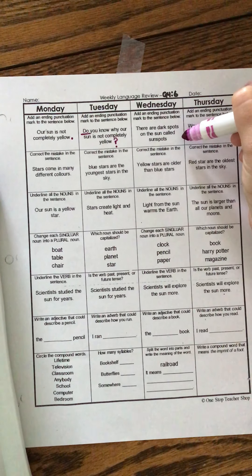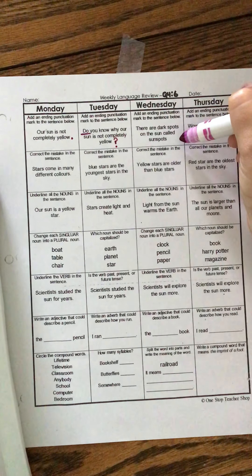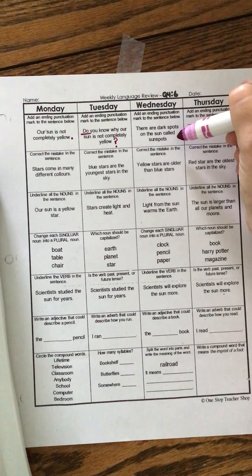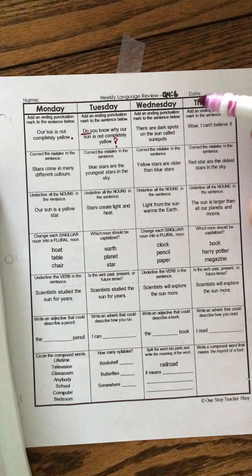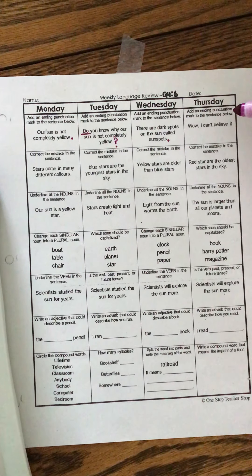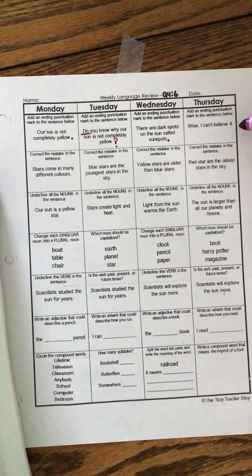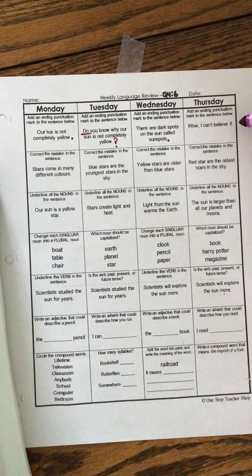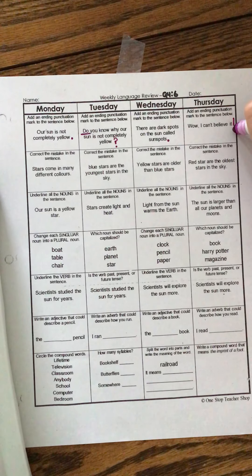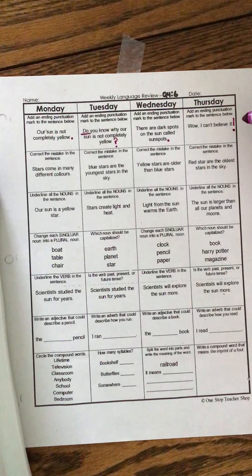Add an ending punctuation mark to the sentence below. There are dark spots on the sun called sunspots. Was that read with a lot of emotion or just regular old sentence? Alrighty. It didn't ask us a question, so we're gonna do a period. Wow! I can't believe it! We need to add an ending punctuation mark. What are we gonna add there? An exclamation mark. Great, because we've read it with a lot of emotion. We were excited. Okay, perfect.